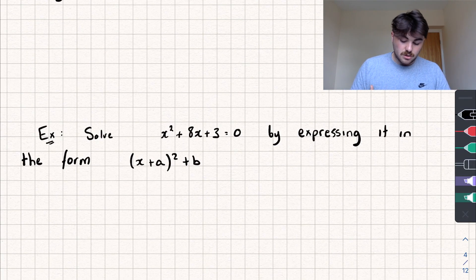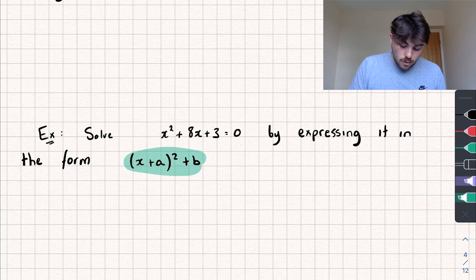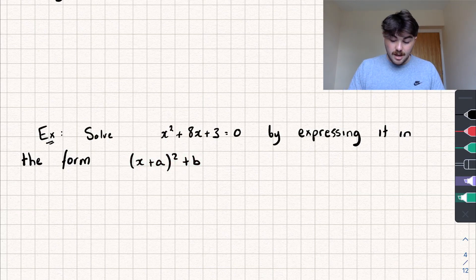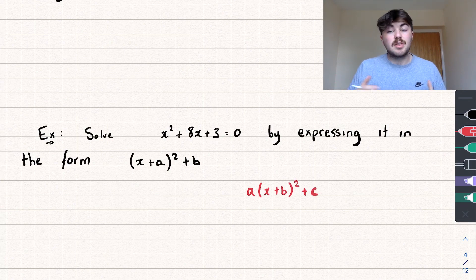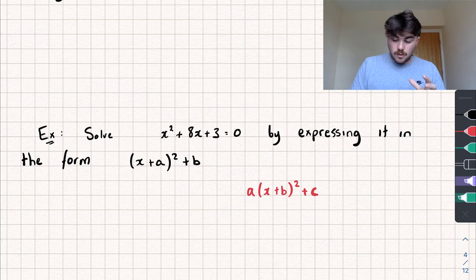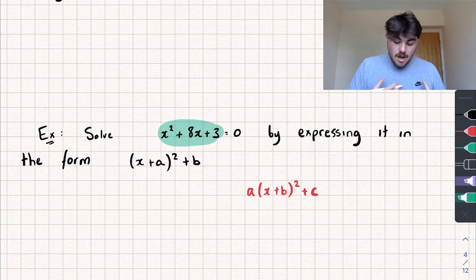The first question is to solve x squared plus 8x plus 3 equals 0 by expressing it in the form x plus a, all squared plus b. We call this the completed square form. If we're dealing with a quadratic equation where the coefficient of x squared is equal to 1 — the number in front of x squared is 1, exactly like this example — then when we put it into completed square form, it will take this form.